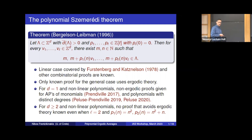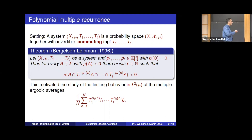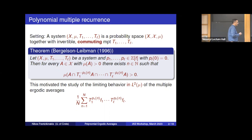That was the combinatorial segment; let's pass to the ergodic one. The way Bergelson-Leibman proved their theorem is by using the Furstenberg correspondence principle — they translate it to a statement in ergodic theory. So from now on, whenever I say 'a system' I mean a probability space with commuting measure-preserving transformations. This motivates the study of the limiting behavior of multiple averages of this form, which is our main object of study.